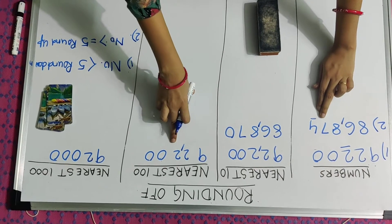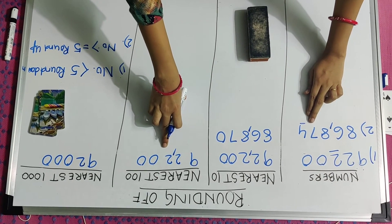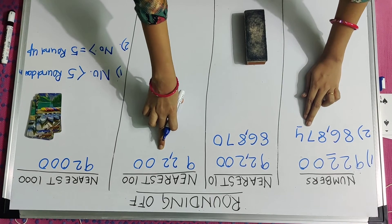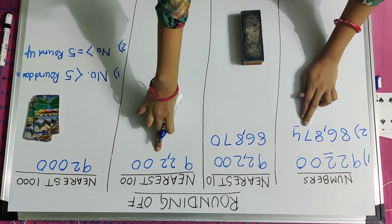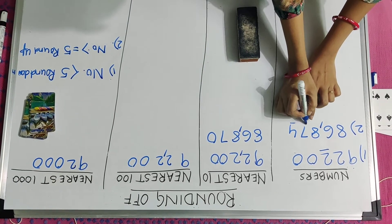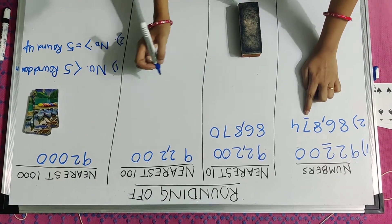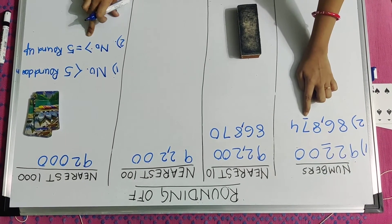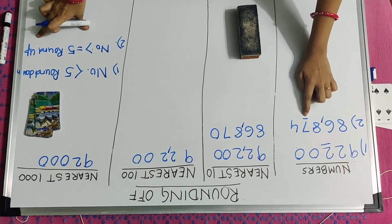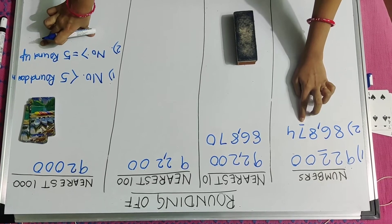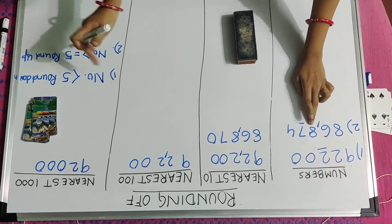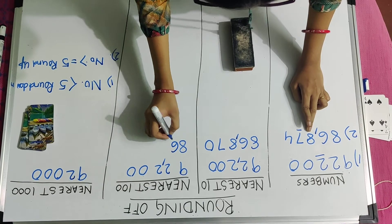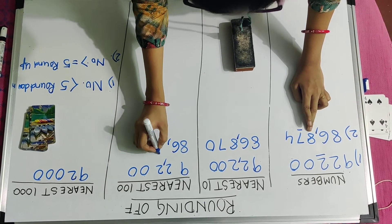My second activity is to round the number to its nearest 100. To round the number to its nearest 100, I have to check its 10's place. Since 7 is greater than 5, I have to do round up. In round up there will be change in its 100's place. So the number is 86,900.